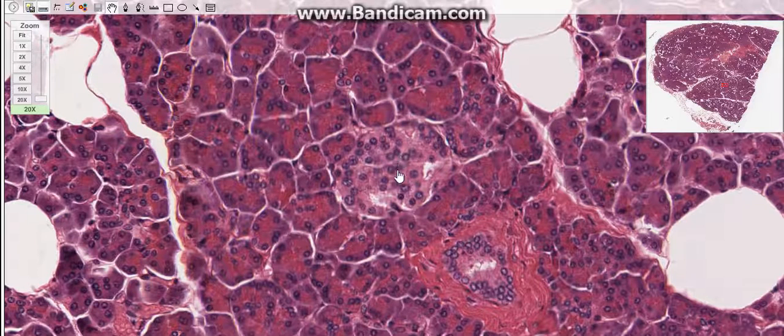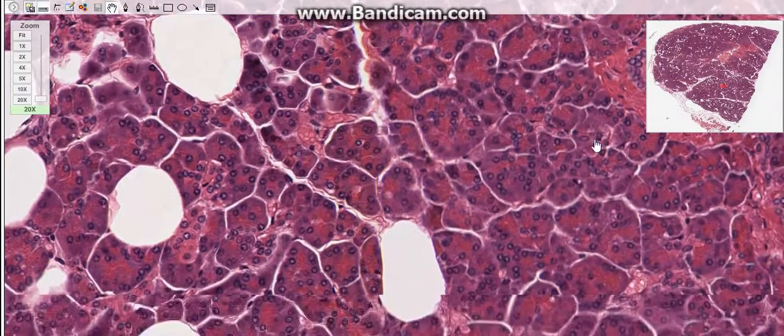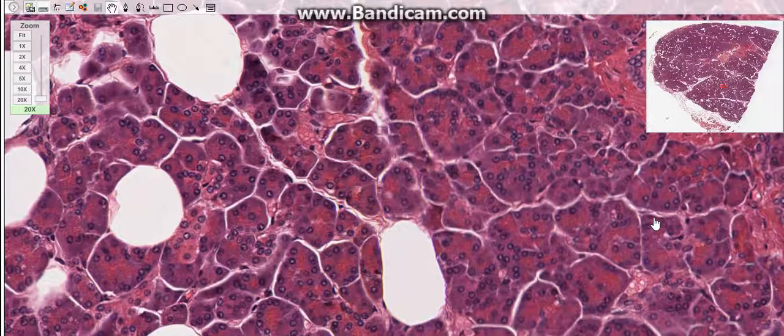Insulin decreases blood glucose levels. Its principal effects are on the liver, skeletal muscles, and adipose tissue. Insulin also stimulates the uptake of glucose from the circulation into cells and activates glucokinase in liver cells.